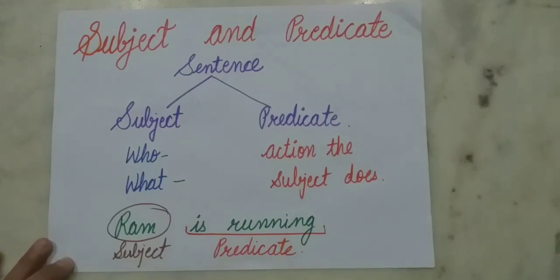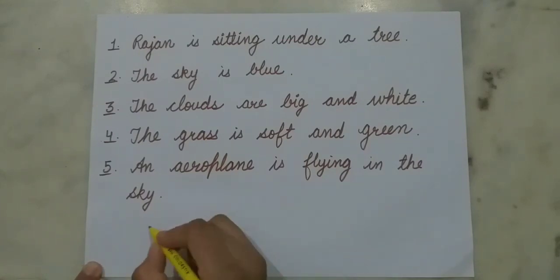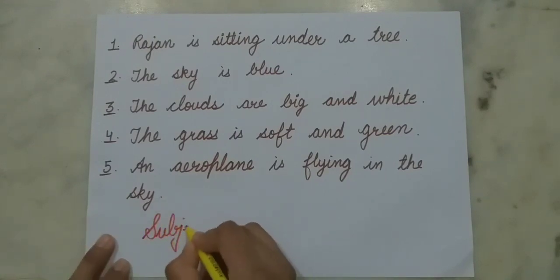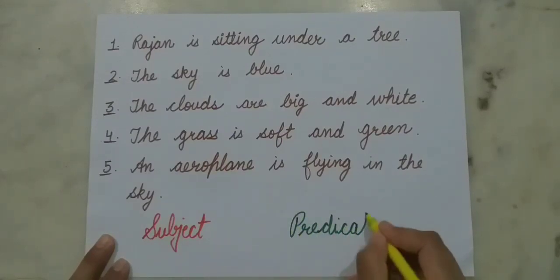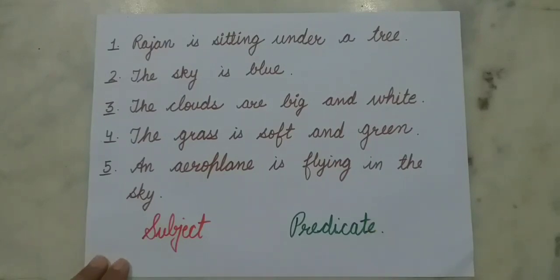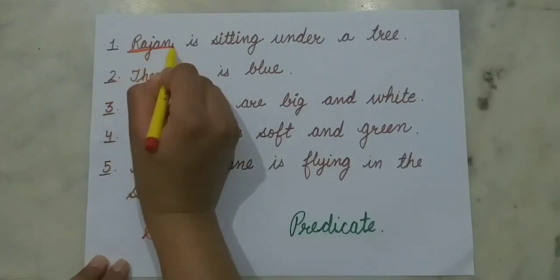Let's see more examples. We will underline the subject with a red marker, whereas we will underline the predicate with a green marker. The first sentence says: 'Rajan is sitting under a tree.' Who or what are we talking about? We are talking about Rajan. So Rajan is our subject.